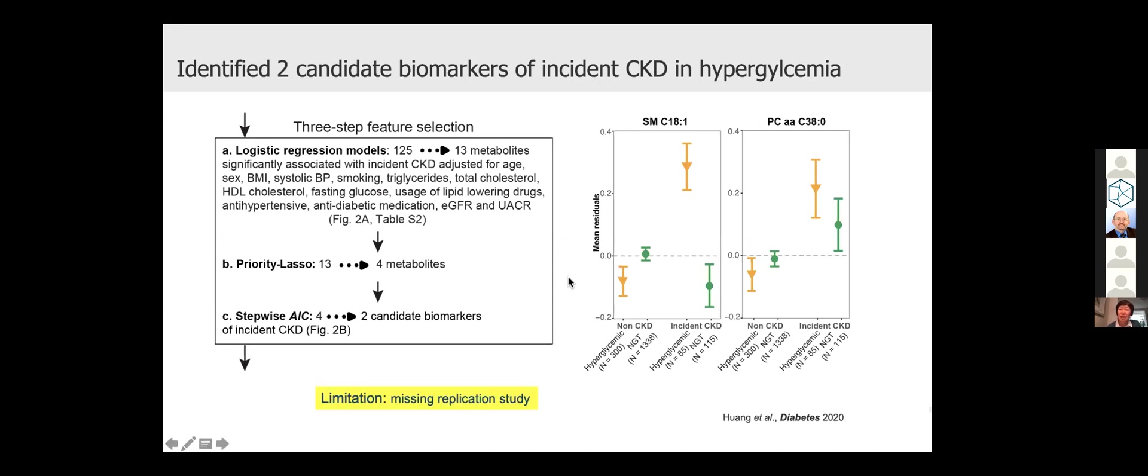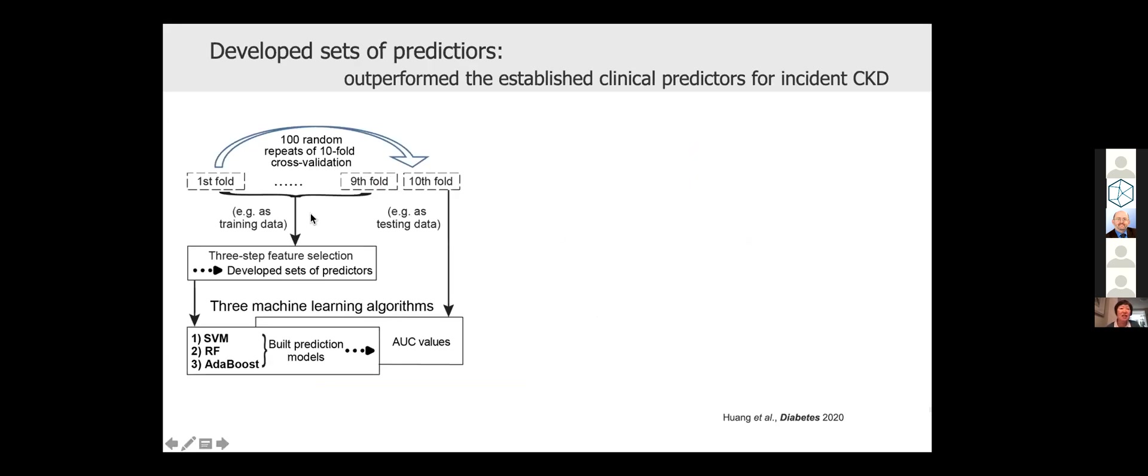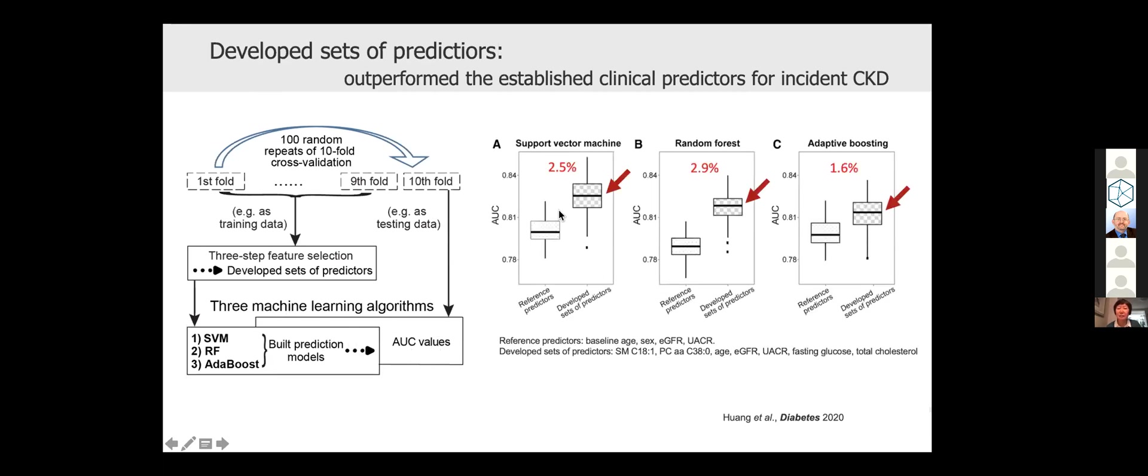Our CKD study was limited. With that, we could not find suitable replication. To overcome this limitation, Jialing performed for developing sets of predictors, she performed tenfold cross validation with 100 random repeats. She used three machine learning algorithms, trained the model with nine-fold of the data and tested the trained model on the tenth fold. The AUC value is based on the test data. As you can see, overall, our developed set of predictors, the median compared to the reference predictors, are all higher, meaning our developed sets of predictors outperform established clinical predictors for CKD.